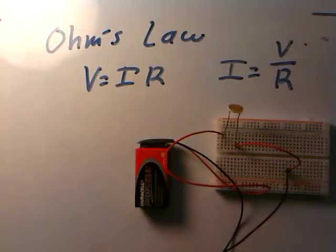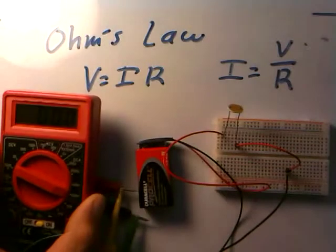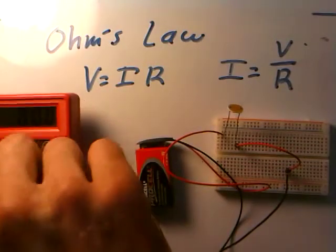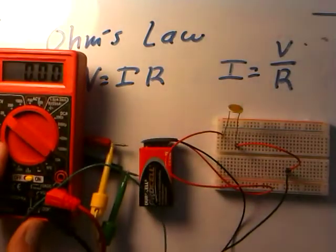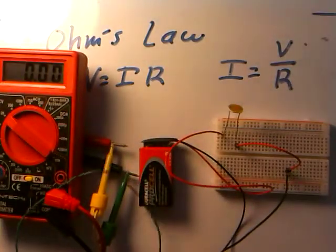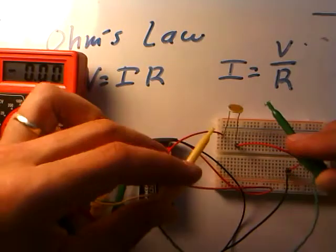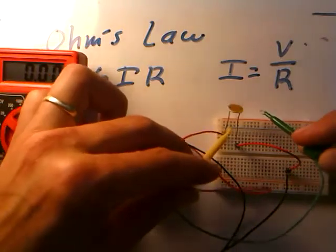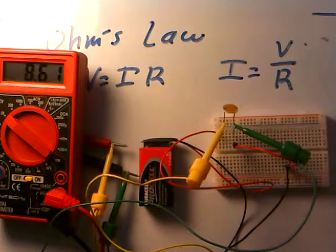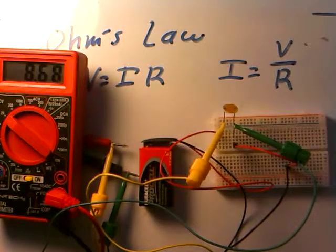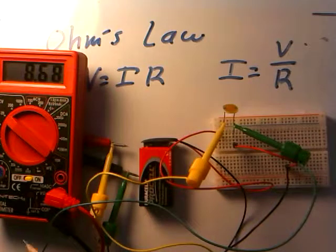Here we have just the photoresistor in the circuit. Let's take a quick voltage measurement. I'll click the meter over to the 20-volt scale and clip the leads directly across the photoresistor — that's about 8.6 volts. I have a 9-volt battery which is a bit questionable, but that's about what I'm getting. So I have a fixed voltage on the photoresistor.